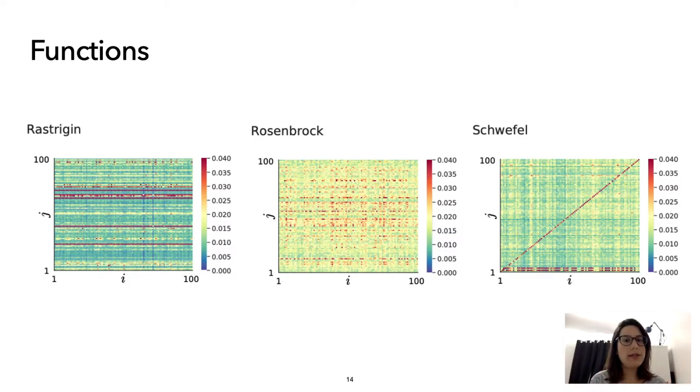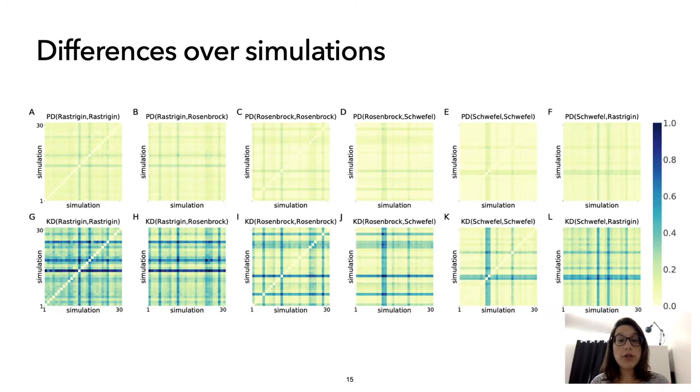But when we look at these differences, are these differences coming from different networks? So using portrait divergence and Kullback divergence, we can measure now whether the network structure is similar or whether the influence between the fish are the same. So values close to zero means similarities. So it means that the network structure is similar in the case of portrait divergence or that the network flow is similar looking at the Kullback divergence.